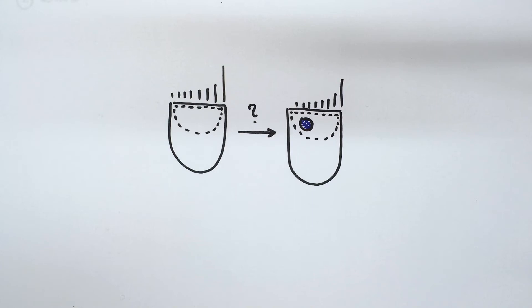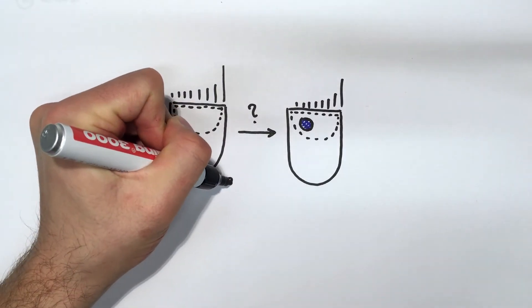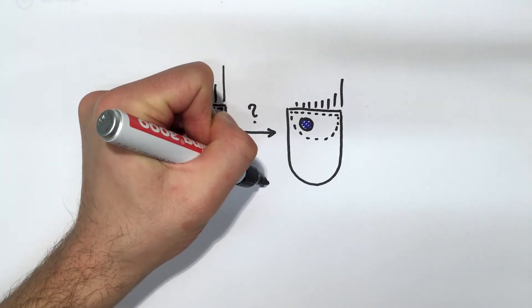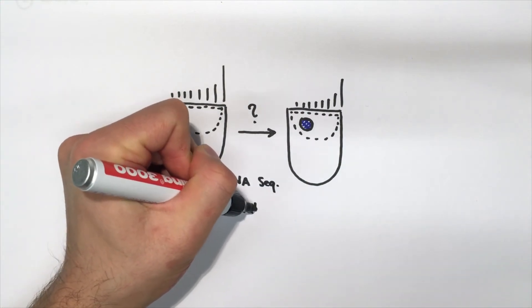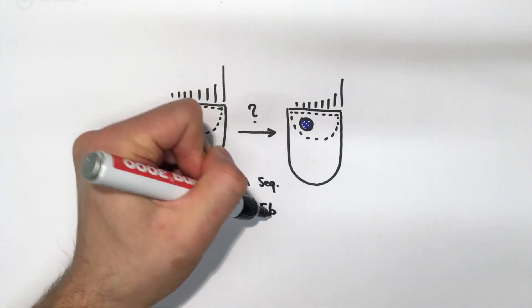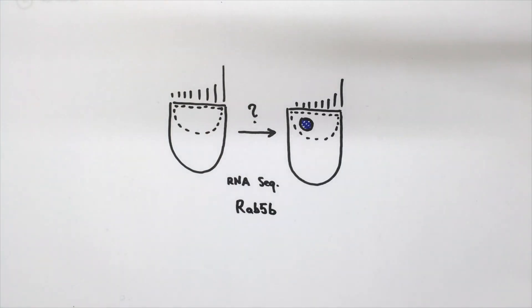Accordingly, we investigated the gene expression profiles of hair cells with and without cuticulosomes and found that, among others, a gene called RAB5, which is involved in the trafficking of molecules and ions into and out of the cell, is higher expressed in hair cells that harbor cuticulosomes.